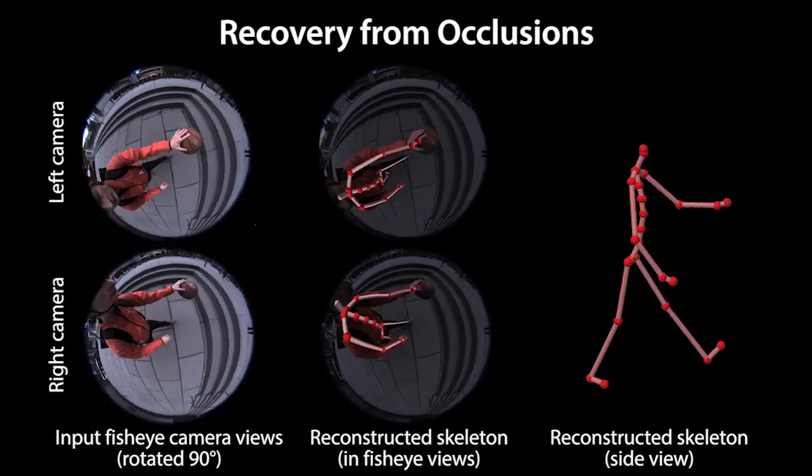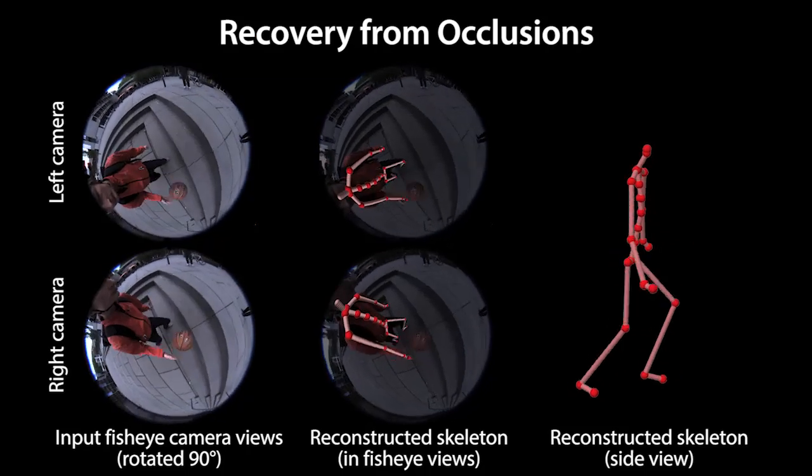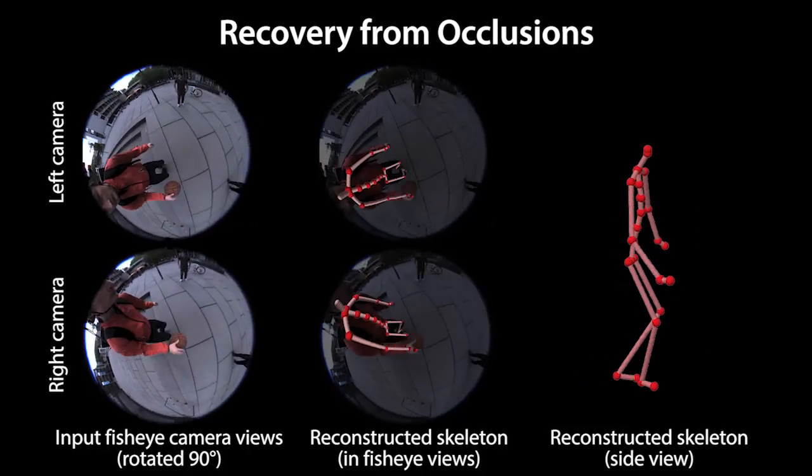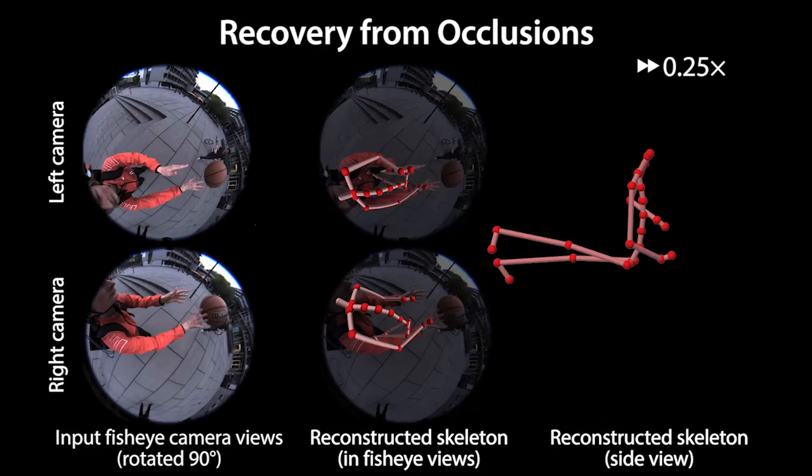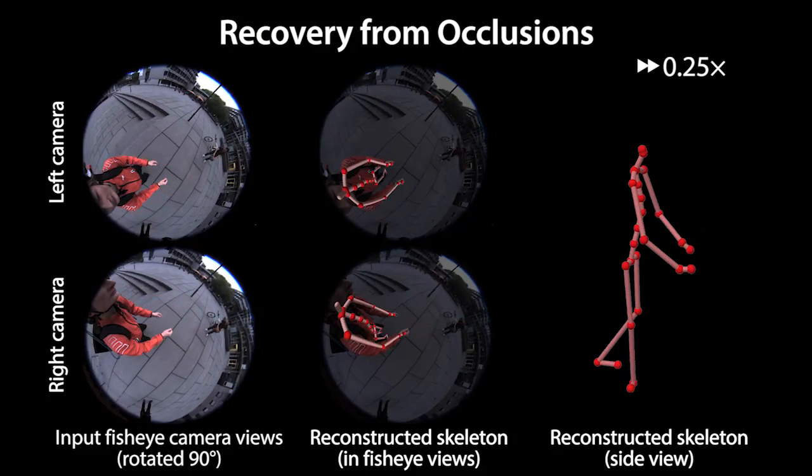Here we show another outdoor sequence playing basketball with frequent self-occlusions that our approach handles well. Very strong occlusion due to the ball throws our tracker off, but it recovers as soon as the ball leaves the field of view.